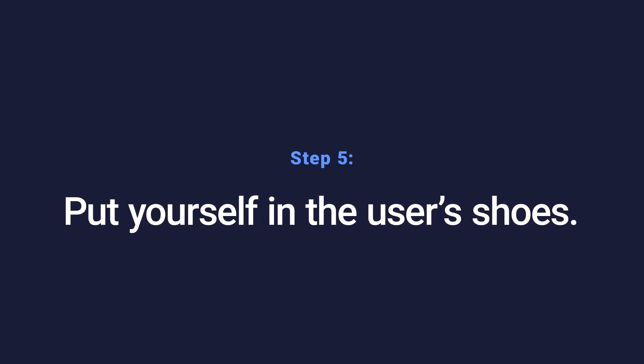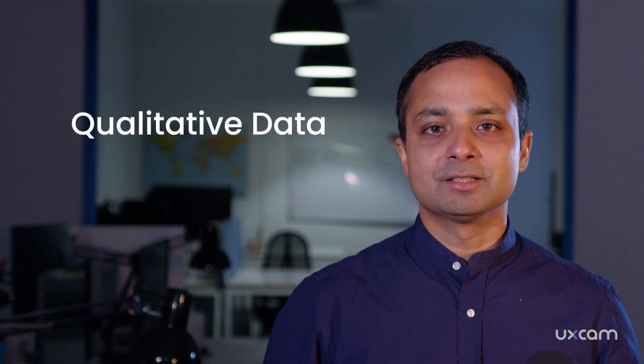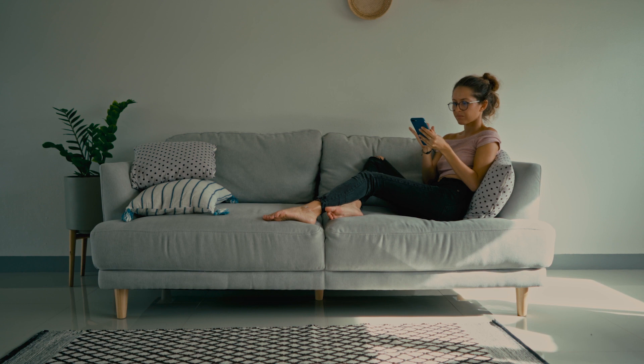Step five: put yourself in the shoes of your user. Now that you've got everyone looking at the same data, it's time to verify your hypothesis with qualitative data. Qualitative data like heat maps and session replays forces you to build empathy towards your customer. Here is what you can do with heat maps: see confusing UX design issues by filtering heat maps through rage taps, when a user taps in the same spot multiple times. Identify broken buttons on your app by filtering unresponsive taps. Observe gestures, like if someone is trying to zoom into something that doesn't get bigger.